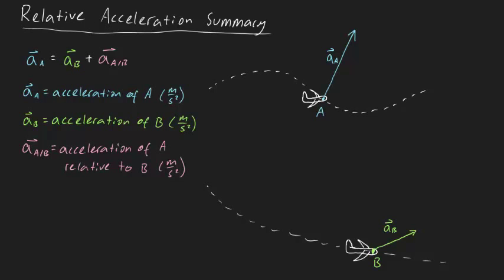This formula can be expressed graphically too. AA looks like this, AB looks like this, and the acceleration of A relative to B needs to meet up with AA, so it will look like this.